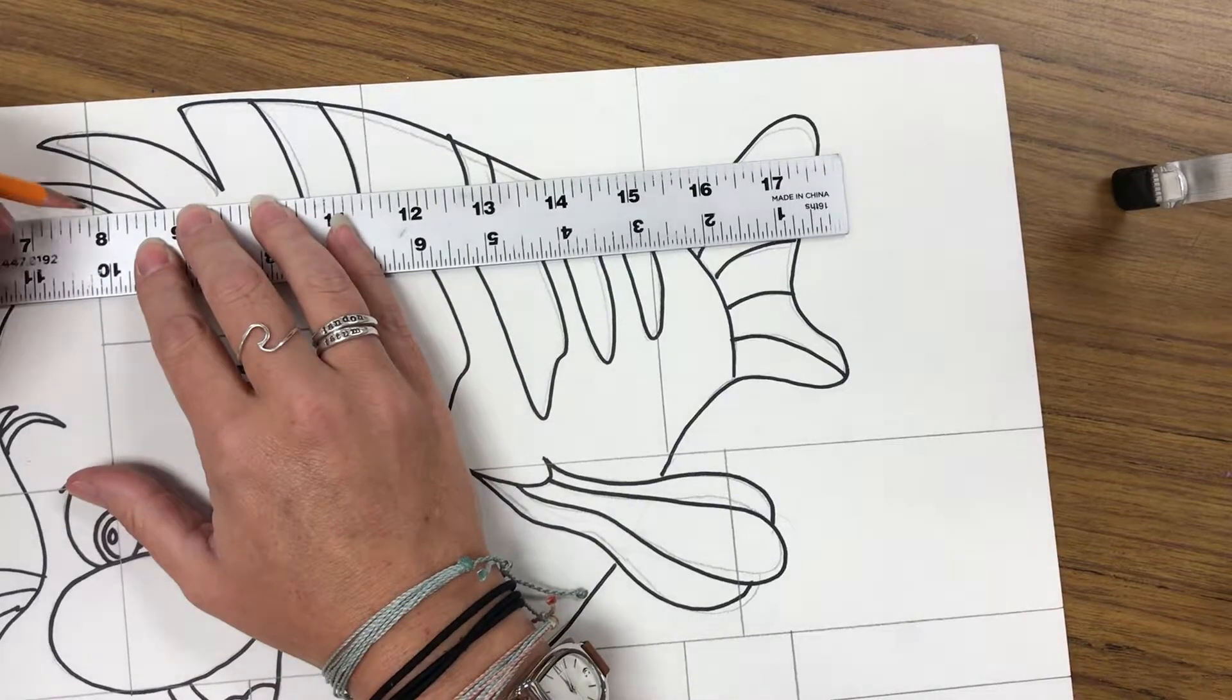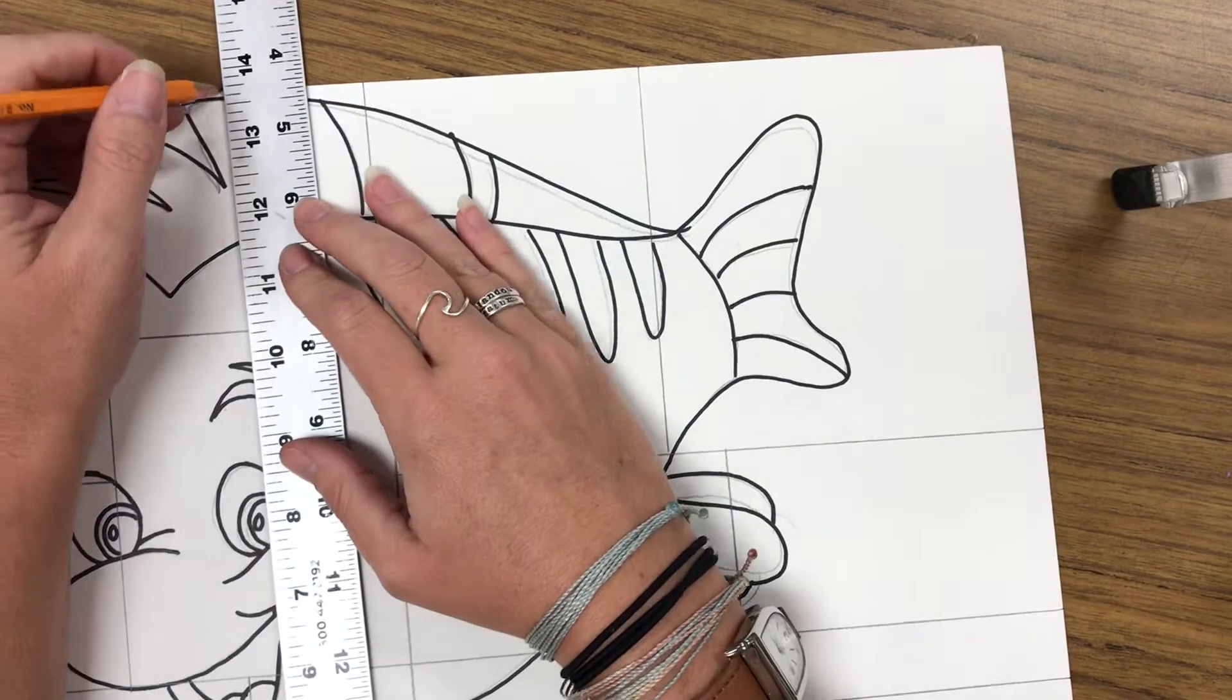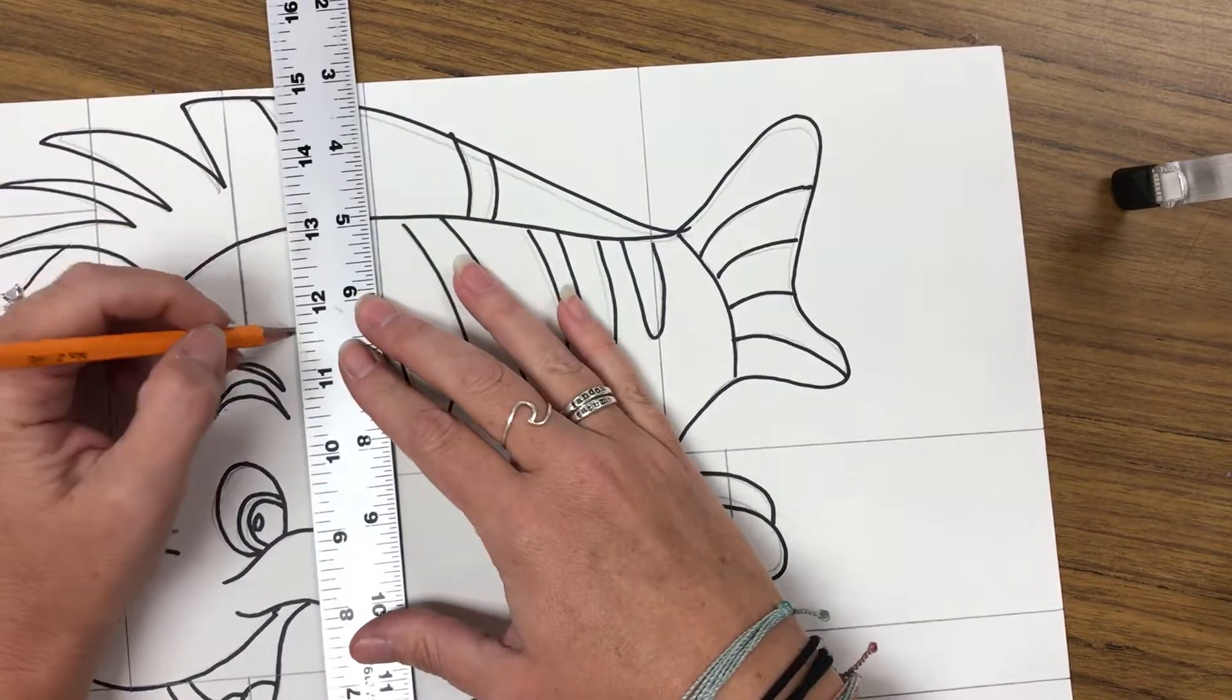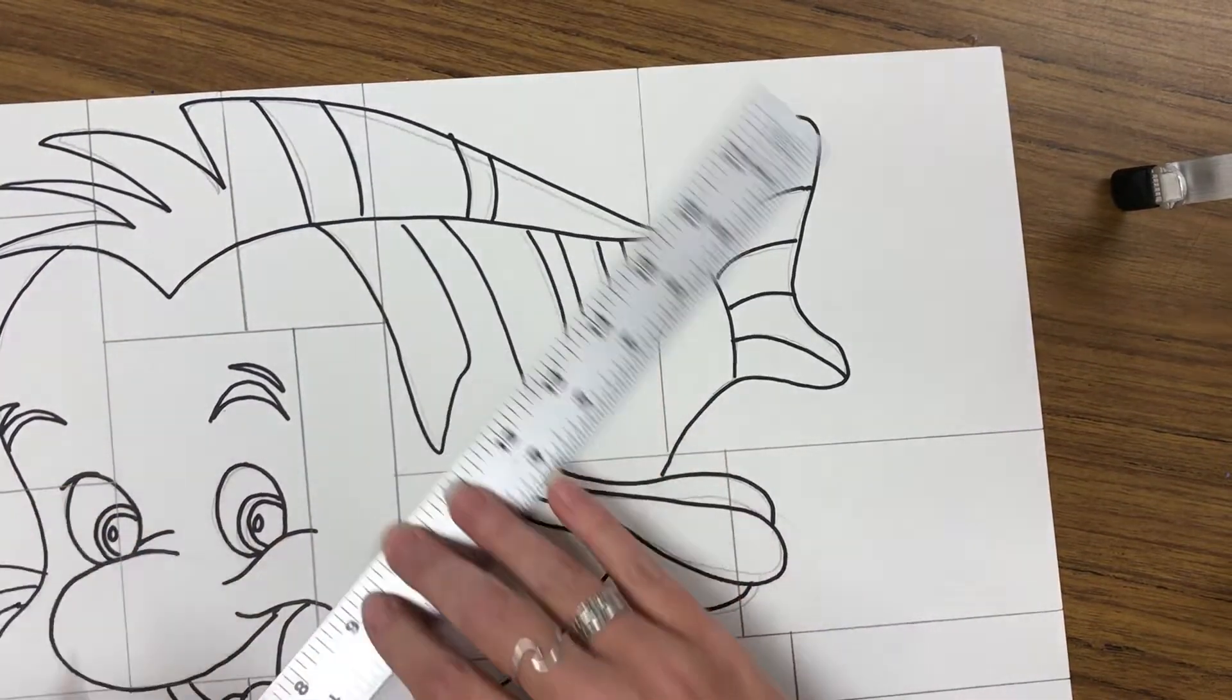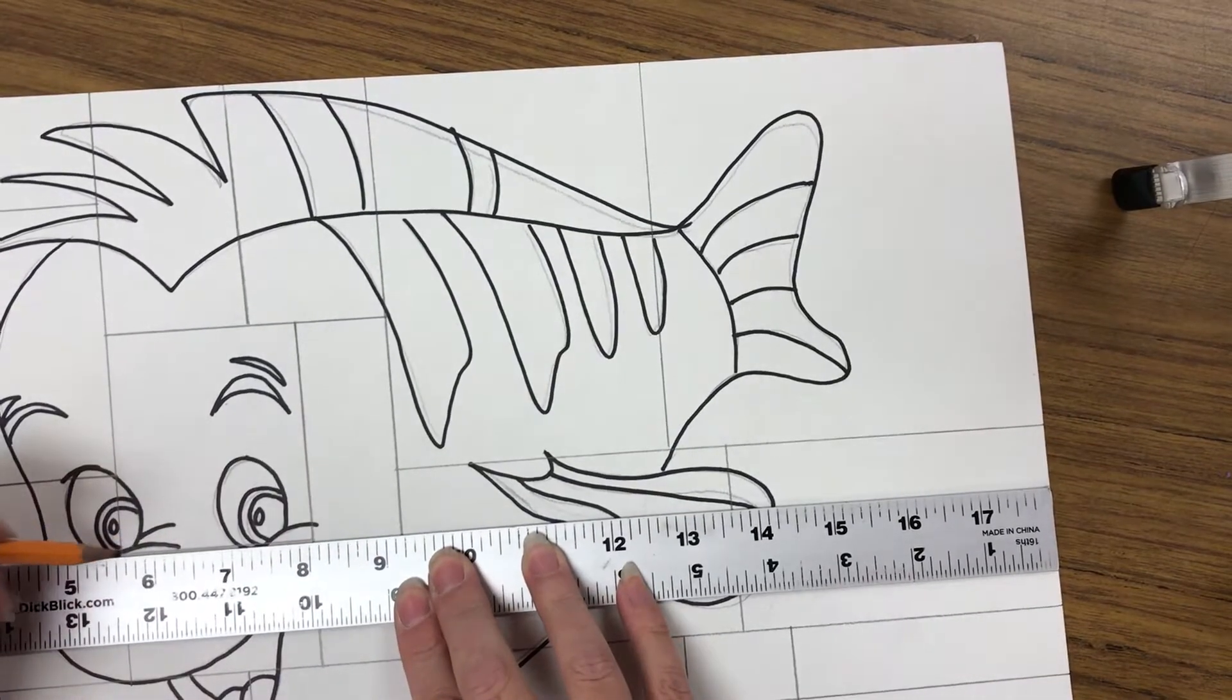In this process, just ignore where your character is. You're drawing straight through your character as if it weren't even there. Straight through his face and all of that. So don't worry about where your character is right now.